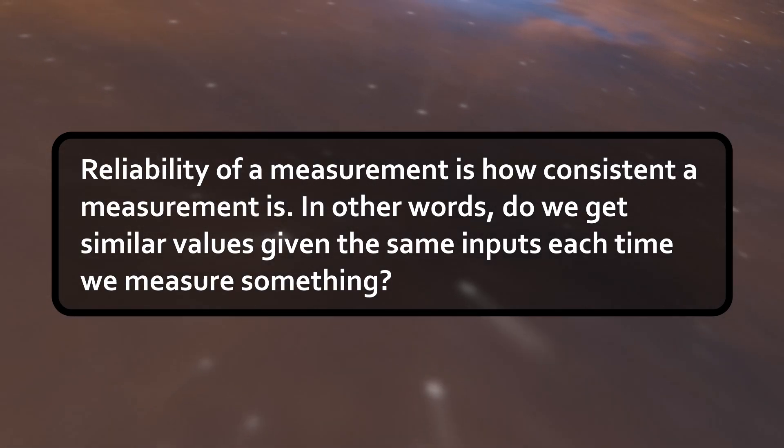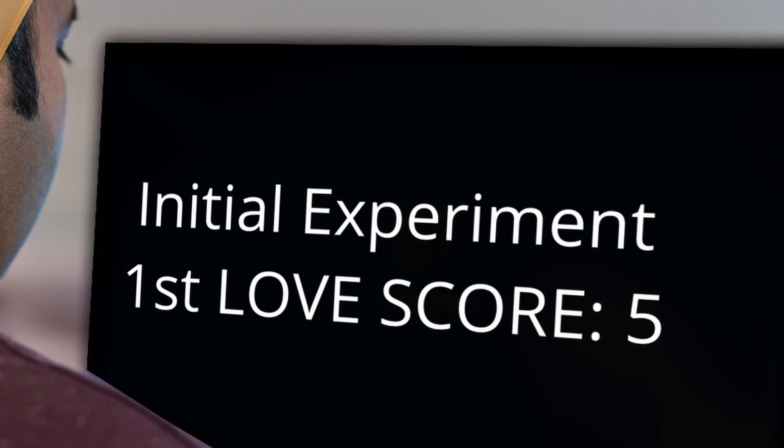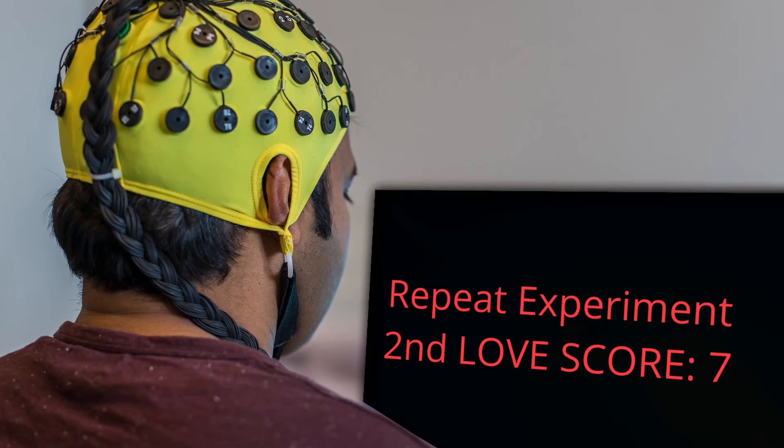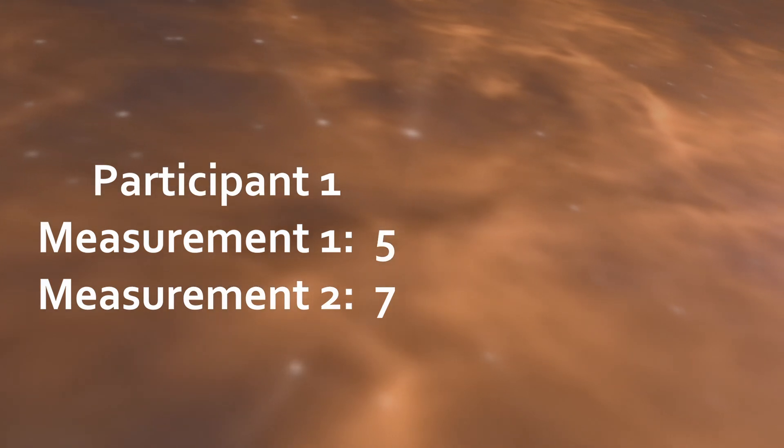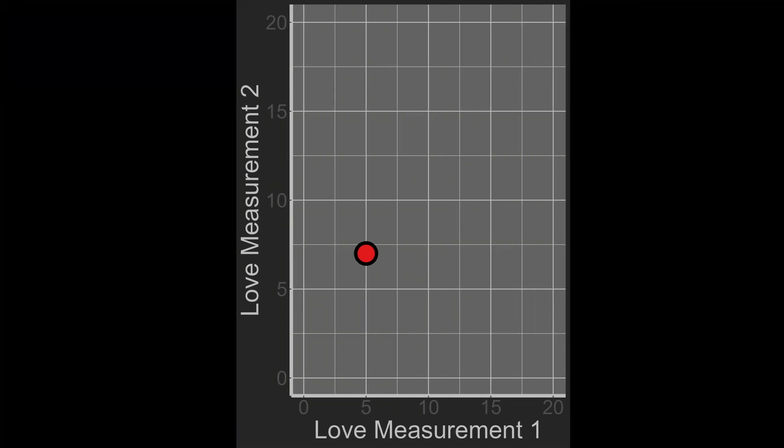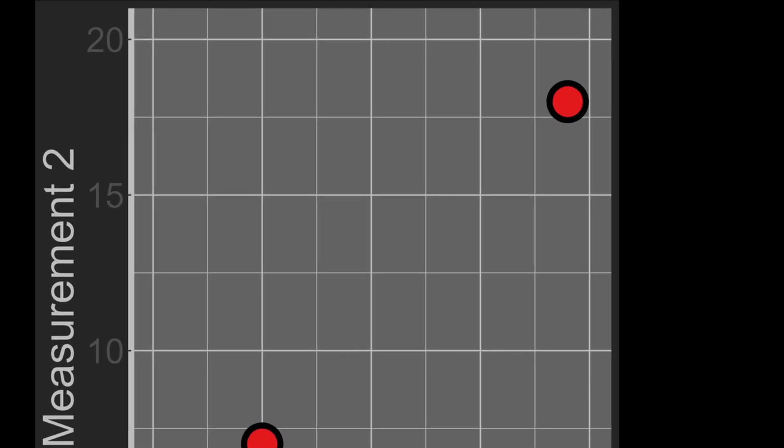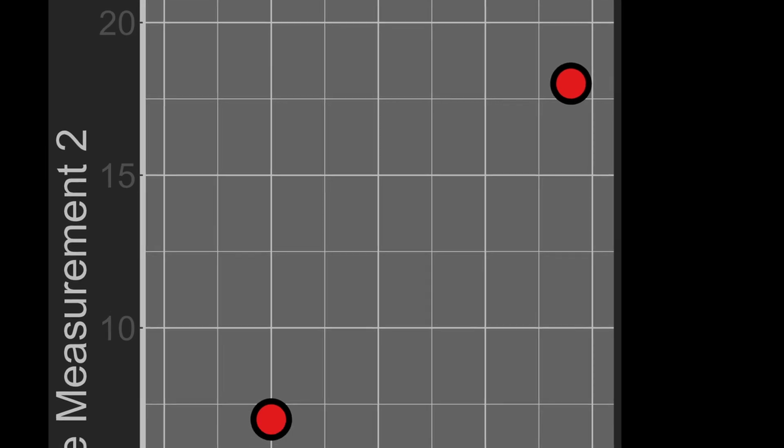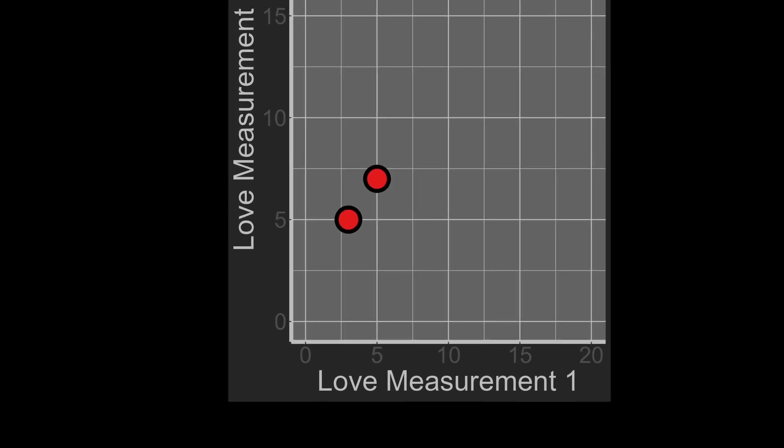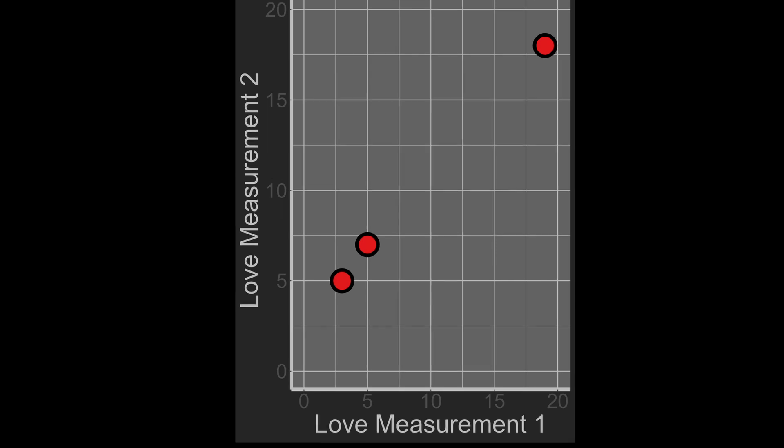What do I mean by that? Well, put simply, reliability of a measurement is how consistent a measurement is. In other words, do we get similar results given the same inputs each time we measure something? But how can we tell if our measurement is reliable? We measure our participant twice. We can then see if the results match. Let's plot the results. We got a love measurement of five the first time and seven the second time for our willing participant. That's only really one data point. And it doesn't tell us very much. Let's take 100 participants and do the same thing. If our measurement is reliable, the first and second measurement should be correlated. So if participant two scores high the first time, they should score high the second time. If participant three scores low the first time, they should score low the second time. See, it looks like there is a correlation here.